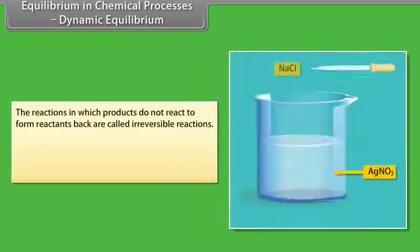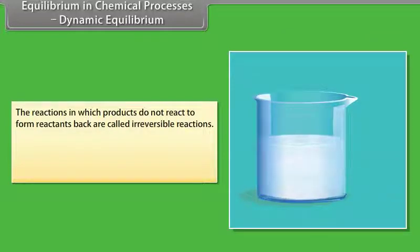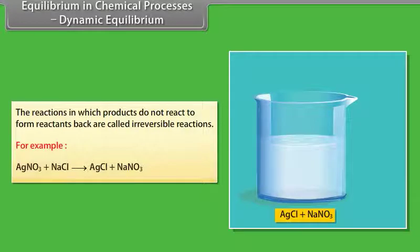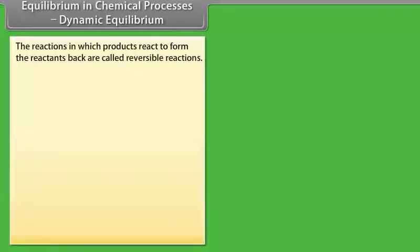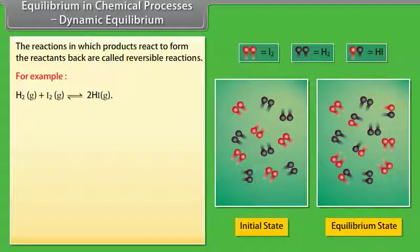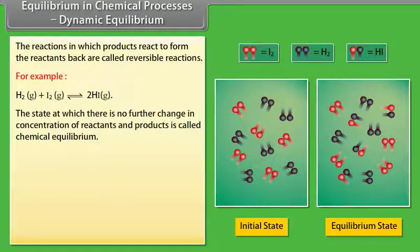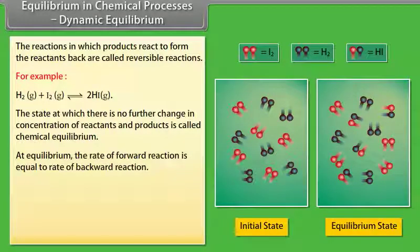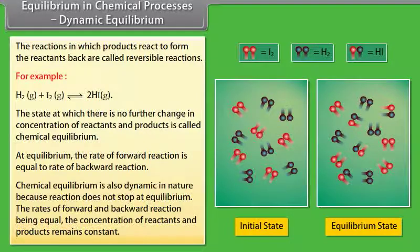Equilibrium in Chemical Processes — Dynamic Equilibrium. Reactions in which products do not react to form reactants back are called irreversible reactions; for example, silver nitrate reacting with sodium chloride to give silver chloride and sodium nitrate. Reactions in which products react to form reactants back are called reversible reactions, represented by two arrows pointing in opposite directions. For example, hydrogen reacts with iodine to give hydrogen iodide. The state at which there is no further change in concentration of reactants and products is called chemical equilibrium. At equilibrium, the rate of forward reaction equals the rate of backward reaction — chemical equilibrium is dynamic because the reaction does not stop at equilibrium.